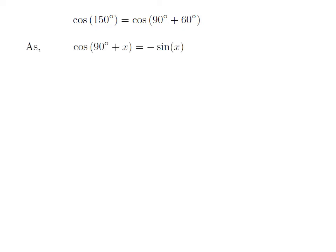As we know, the trigonometry identity cosine of 90 degrees plus x is equal to minus sine of x.